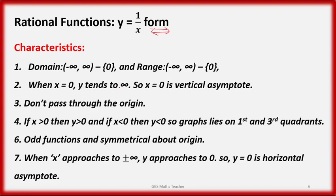Next, rational function y equal to 1 by x form. Its characteristics: the domain is R minus 0, for every value of x except 0, y is defined. Range is also R minus 0. When x equals 0, y tends to infinity, so x equals 0 is a vertical asymptote. It doesn't pass through the origin. When x is greater than 0, y is greater than 0. If x is less than 0, y is also less than 0. The graph is in the first and third quadrants.